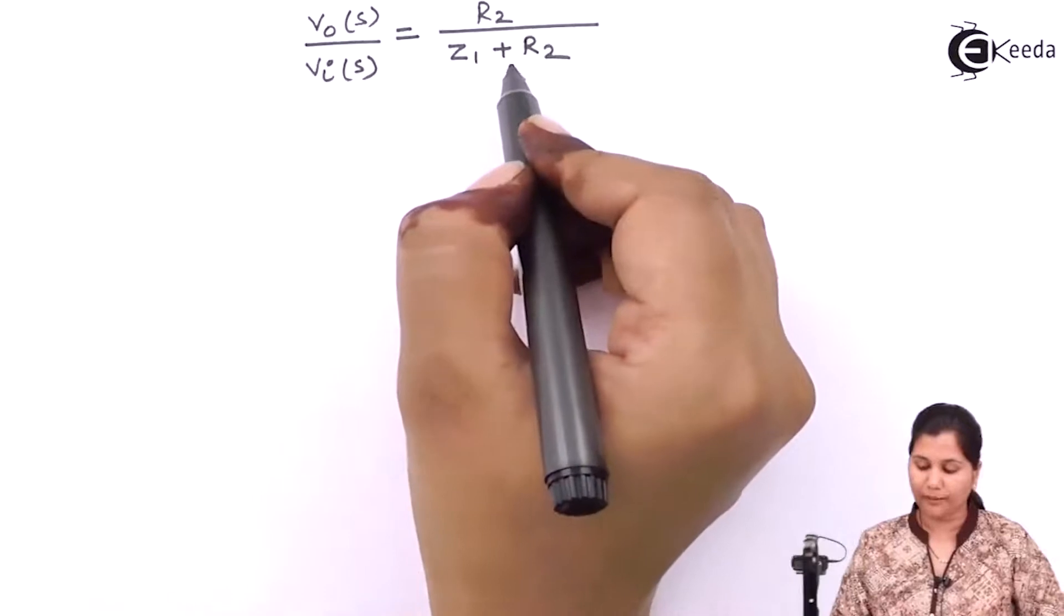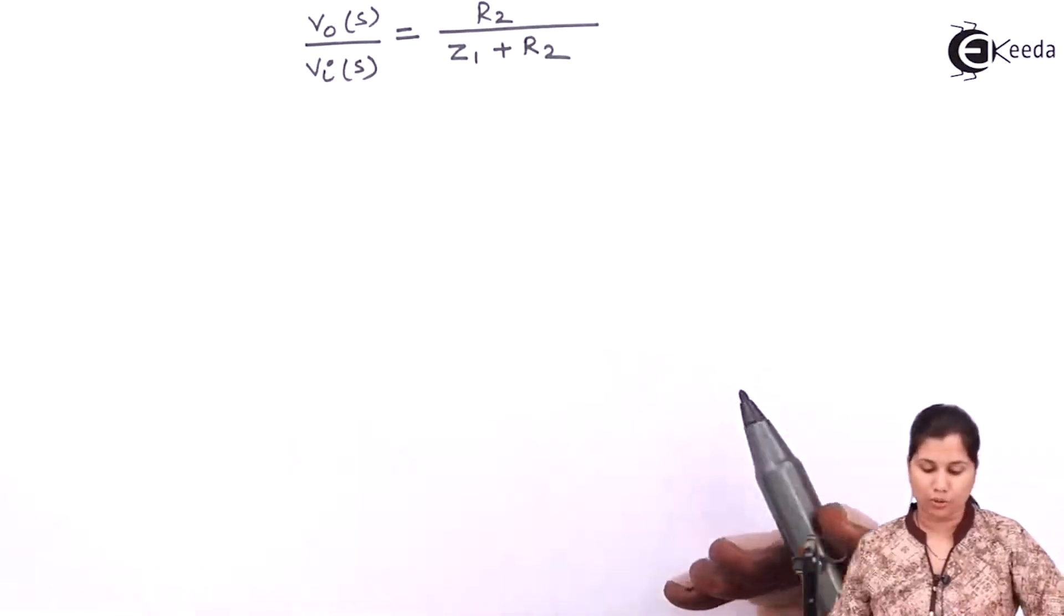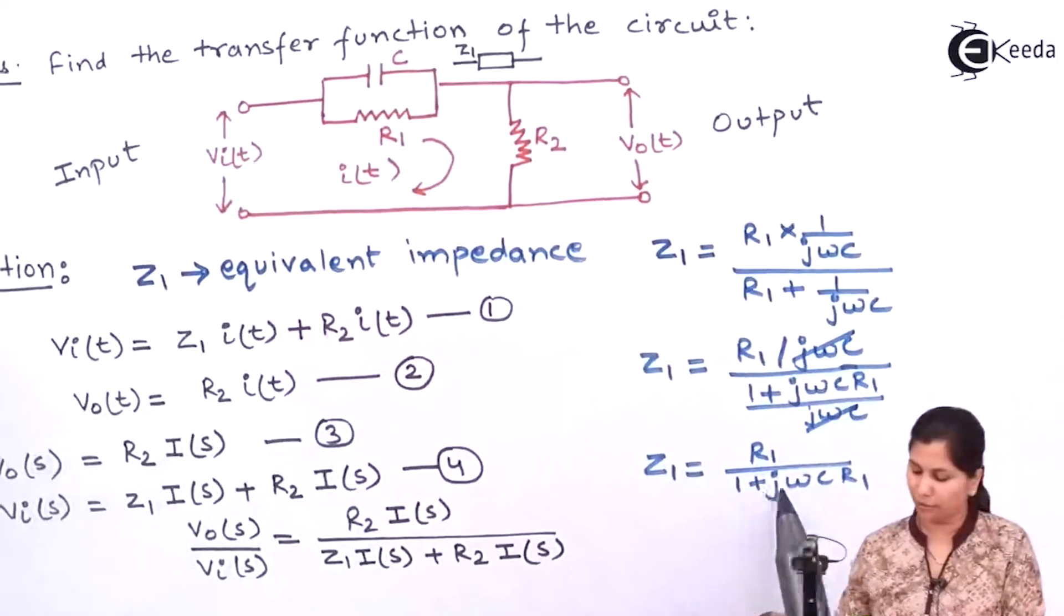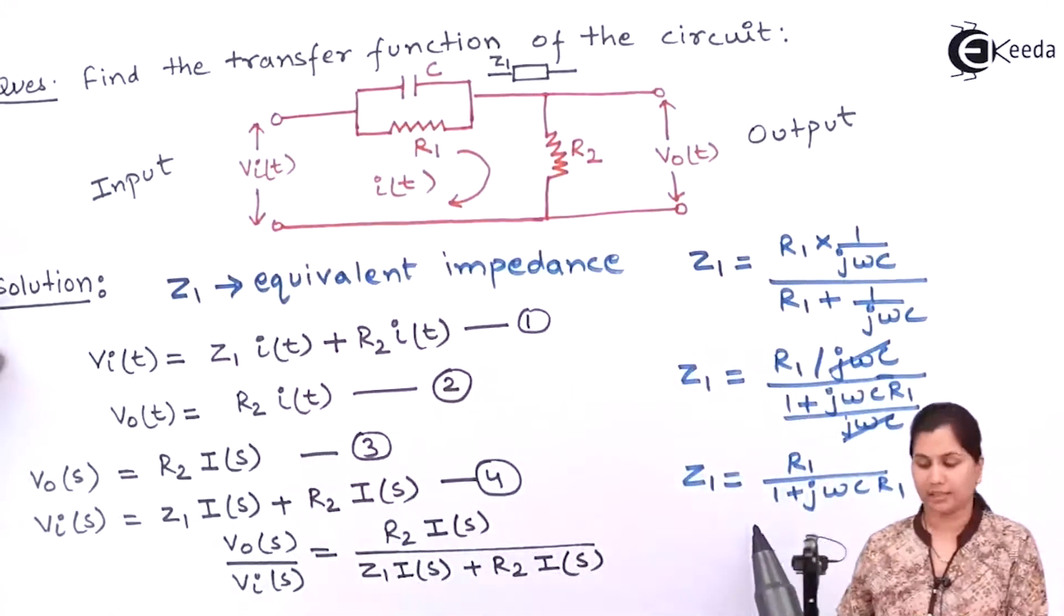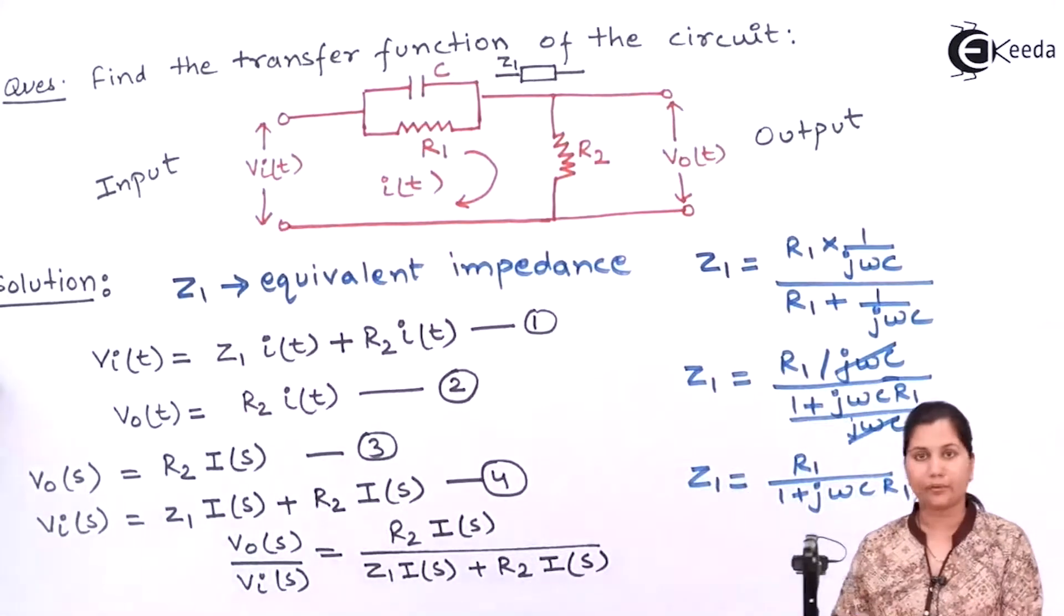Now putting the value of Z1 which we have obtained earlier. So Z1 was equal to R1 upon 1 plus jωCR1. So let's put its value.